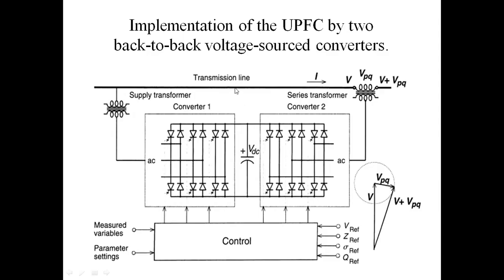This UPFC controls mainly three possibilities: one is voltage controlling, second is impedance controlling, and third is phase angle control. Three controls are possible using this UPFC controller. By using this Series Compensator and the Shunt Compensator, we will control voltage, impedance, and phase angle. This UPFC has three control possibilities: voltage, impedance, and phase angle. This is the basic operation of the UPFC controller.